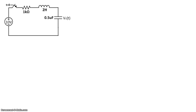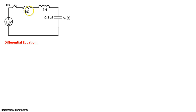Here's our circuit. At time t equals 0, the switch is closed. A 10-volt source powers a 1-kilo-ohm resistor, 2-Henry inductor, and a 0.5-microfarad capacitor. By applying Kirchhoff's voltage law around this loop, we can say that the 10-volt source is equal to the voltage dropped across the resistor, the inductor, and the capacitor.